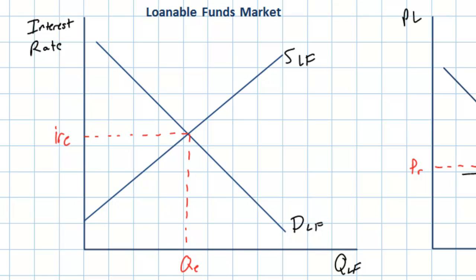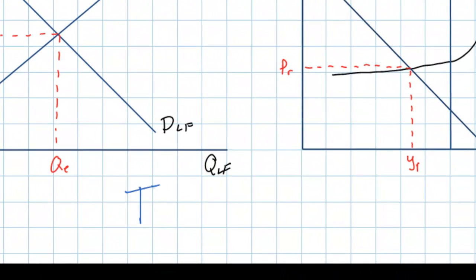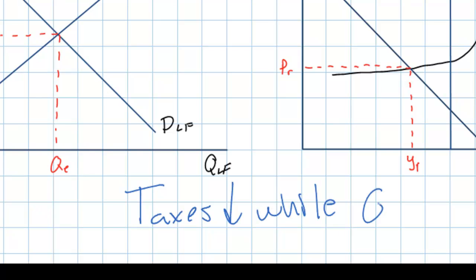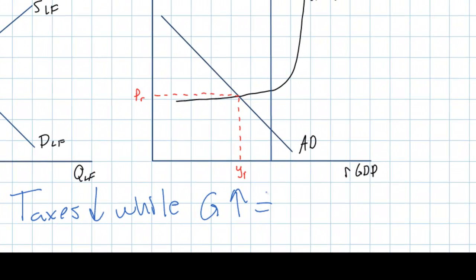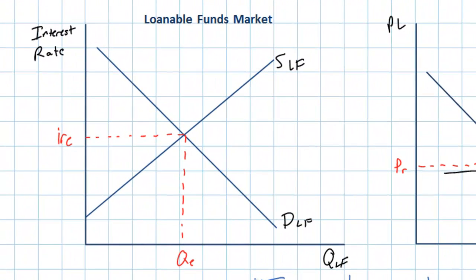The answer is: maybe. If a government is running a balanced budget — every dollar spent comes from taxpayer money — then no, the government has no effect on the loanable funds market. However, if a government engages in expansionary fiscal policy, meaning taxes are lowered while government spending increases, this leads to a budget deficit. A budget deficit occurs when a government spends more than it collects in taxes, and the government must get that extra money from the private loanable funds market — it becomes a borrower.